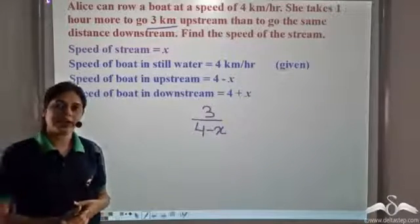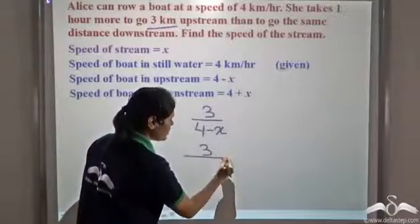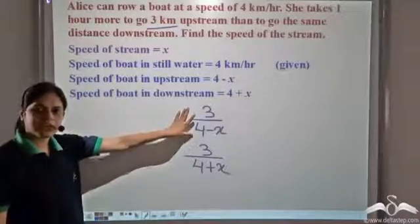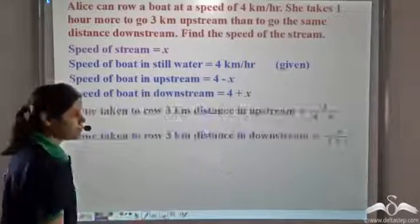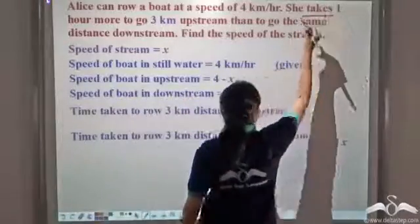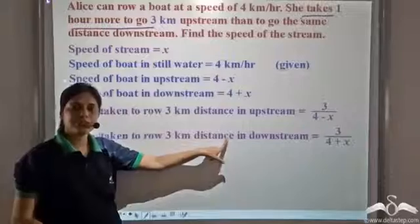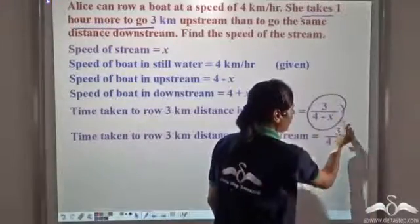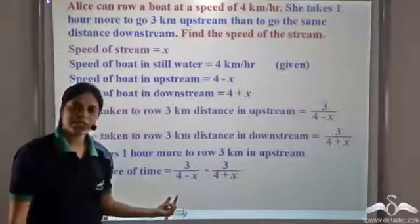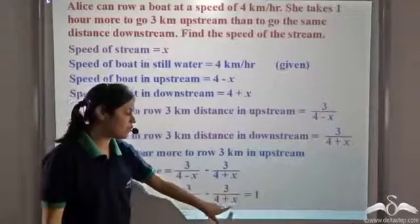The time taken by Alice to go downstream is again distance by speed downstream. Distance remains the same but speed changes, so the speed is 4 plus x. It is given that she takes 1 hour more to go upstream — that is, time upstream minus time downstream equals 1. So the equation is: 3 by (4 minus x) minus 3 by (4 plus x) equals 1.